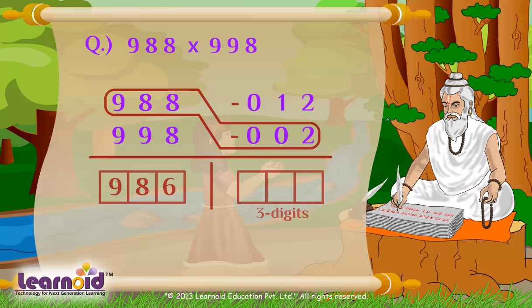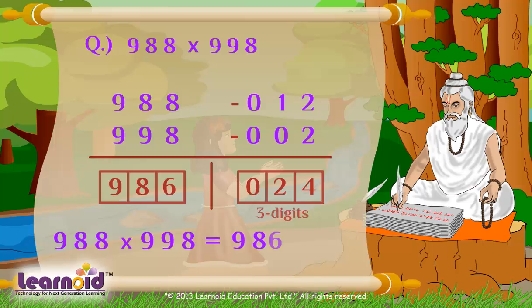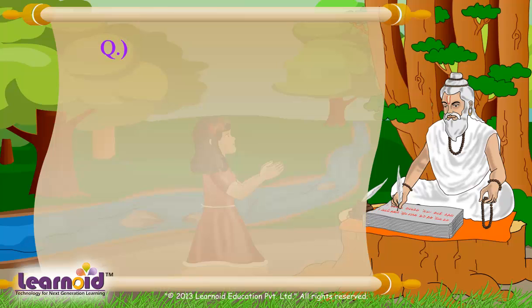And write 986 on left. Now to find right digits, we will multiply vertically. 012 multiplied by 2 equal to 24. We will add 0 before 24 to make it 3 digits. So 988 into 998 equal to 986024. One more example.